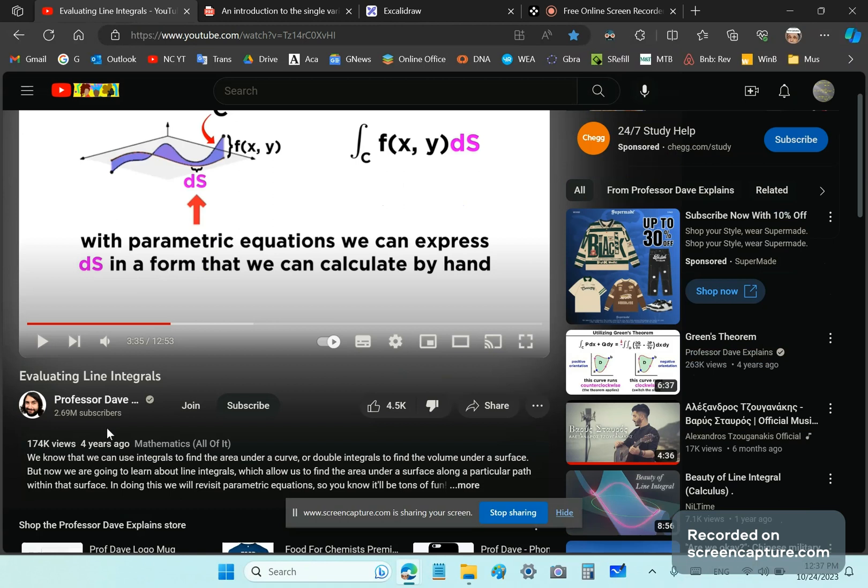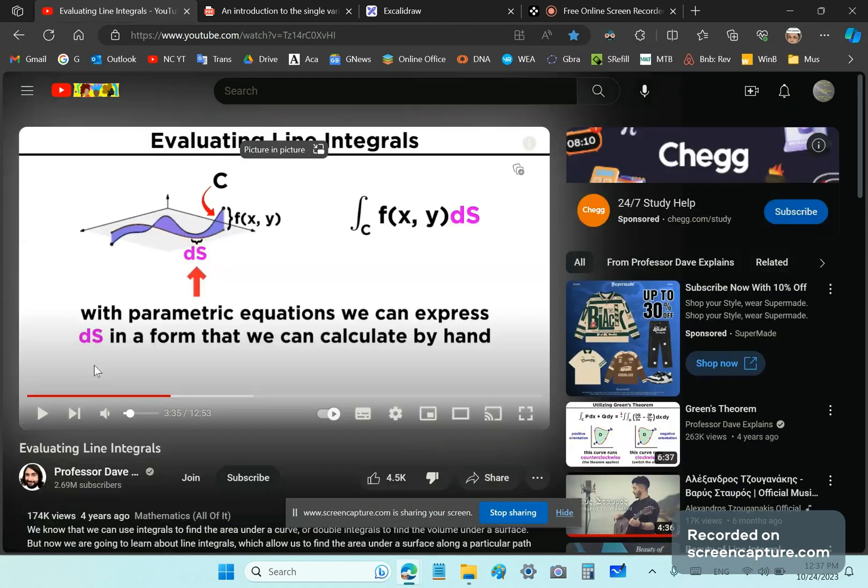So first of all, he says that with parametric equations we can express ds in a formula we can calculate by hand. Well, that's absolute nonsense. It can be done with or without parametric equations.